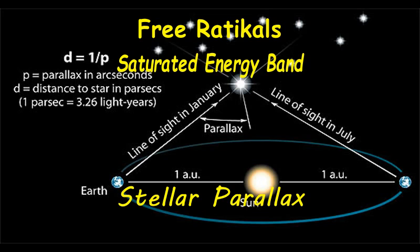Parallax, from ancient Greek 'parallaxes,' refers to the alternation of displacement or difference in the apparent position of an object viewed along two different lines of sight, which is measured by the angle or the half-angle of inclination between those two lines.